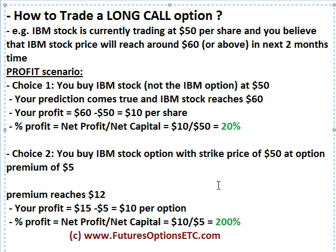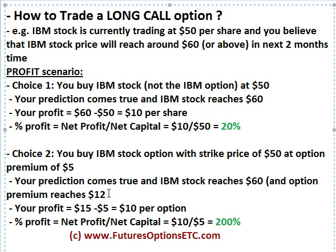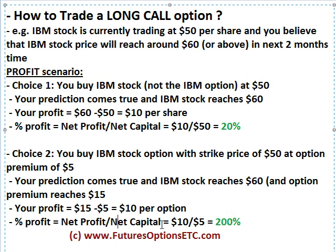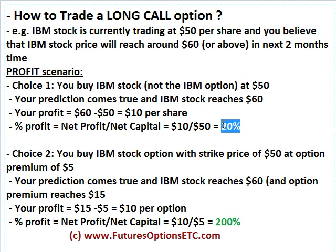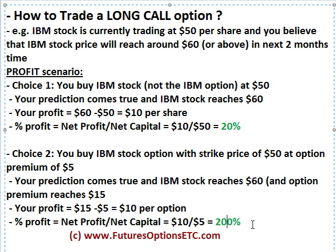Assume the same scenario — your prediction comes true and IBM stock price actually reaches $60, and hence the option value reaches $15. So your profit in this case is $15 minus $5, that's $10 per option. In terms of percentage, net profit divided by net capital is $10 divided by $5, which results in a 200% profit. So in choice one the profit is restricted to just 20%, but with the IBM stock option the profit has risen significantly by 10 times from 20% to 200%. That's where option pricing and mechanics come in and provide you with more potential to generate profits.